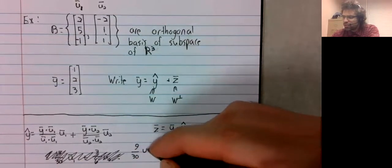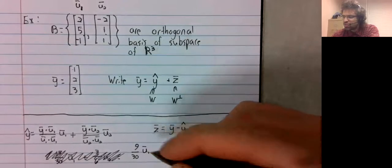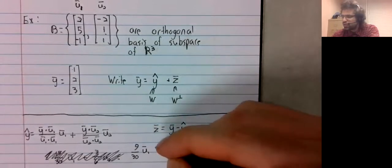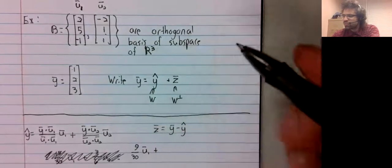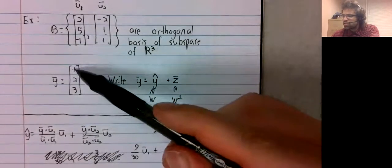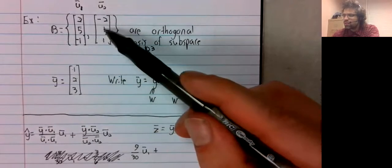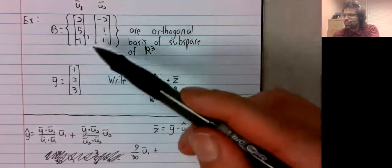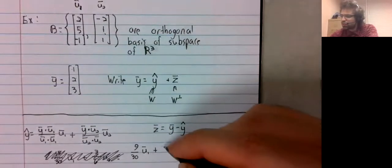Nine thirtieths u1 plus, let's see, negative two, positive two, positive three.